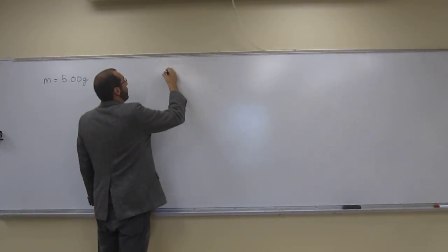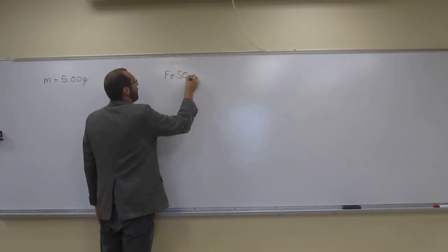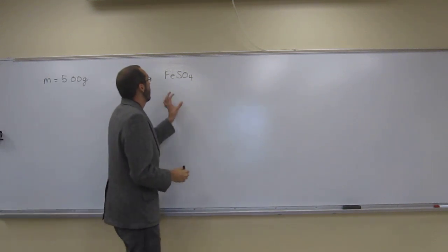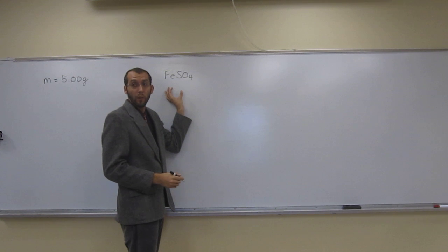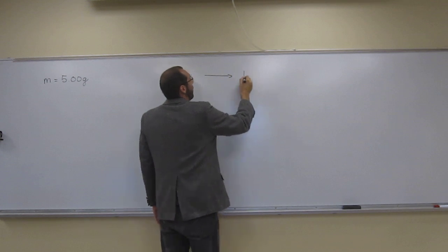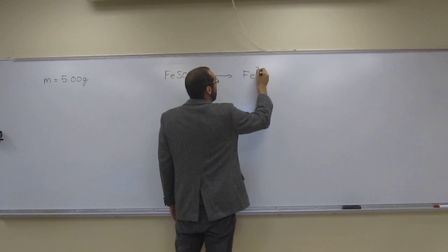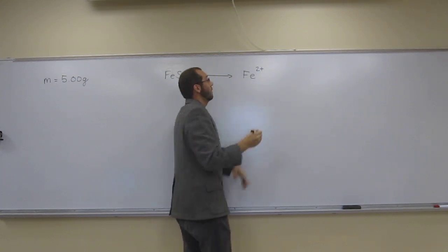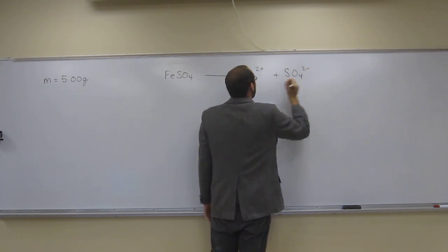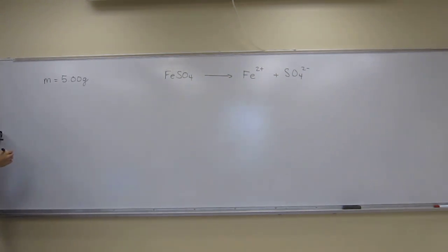Okay, so iron 2 sulfate is going to be FeSO4, like that. So it wanted to know how many iron 2 ions are there. You can think about it like this: for every FeSO4, you make one Fe2+ and one SO4 2-. So it's just looking for the number of iron 2 ions.